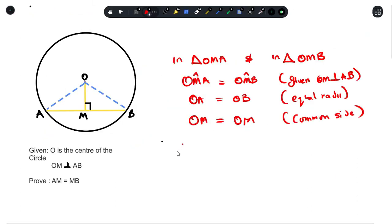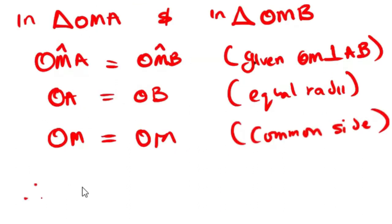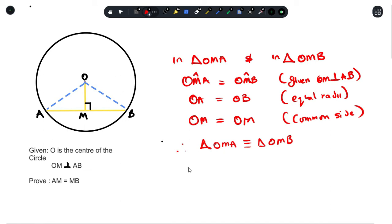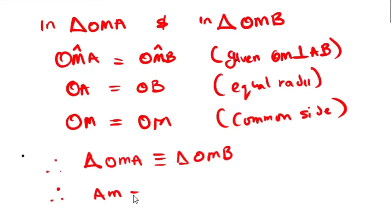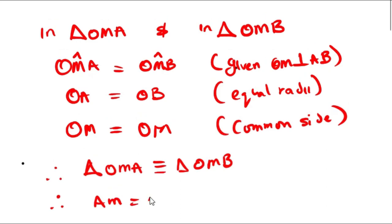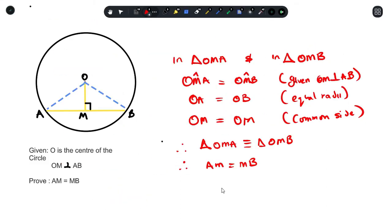Both triangles have OM so therefore it's a common side. With three statements, we can say with confidence that the triangle OMA is congruent to triangle OMB. Now because they are equal, it also means that AM would be equals to MB. And that's it. So this is how you prove the theorem perpendicular lines from the center bisects a chord.